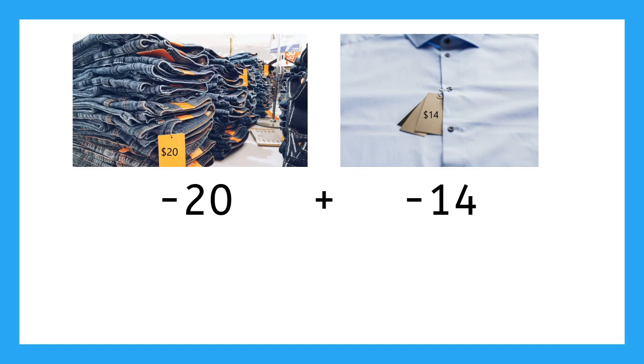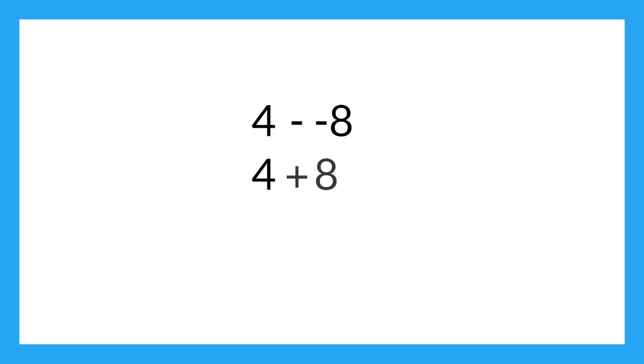Now if we spend money on multiple different items, the negative amounts combine. For example, if you buy a pair of pants for twenty dollars and a shirt for fourteen, you've spent thirty-four dollars total. And if you already have four dollars in your wallet and then return an item that originally cost you eight, you'll get an eight dollar refund added to the four, making twelve.